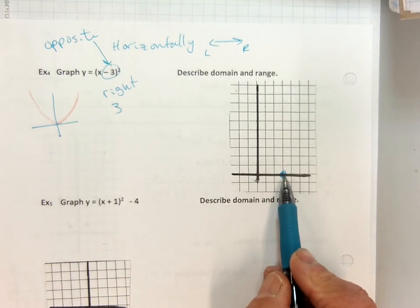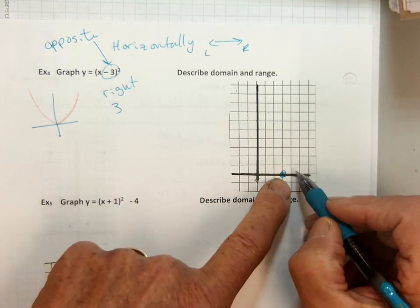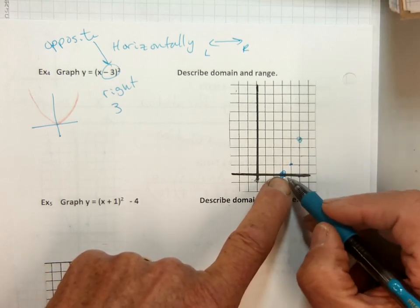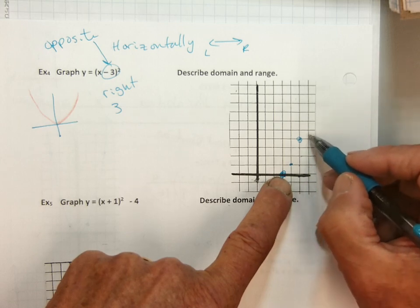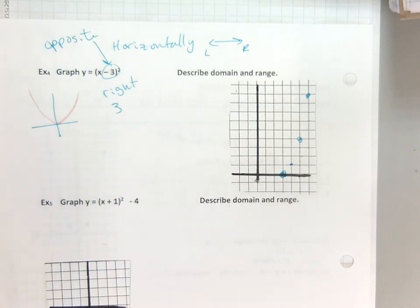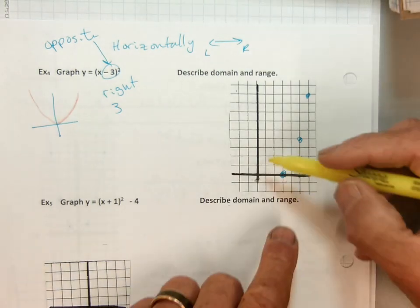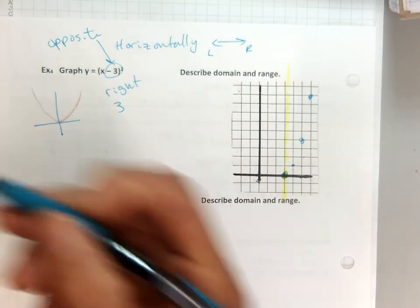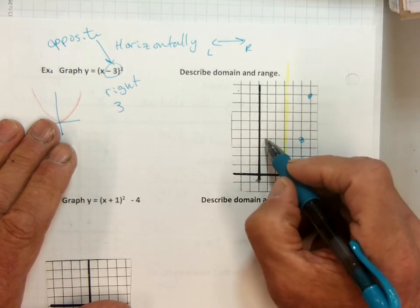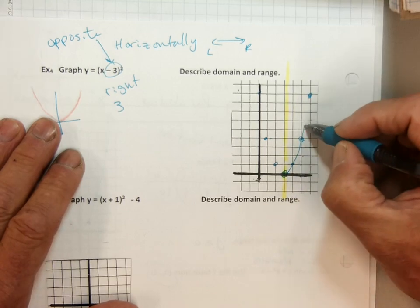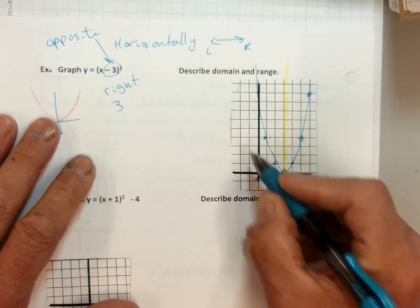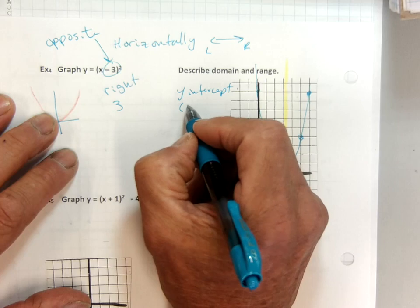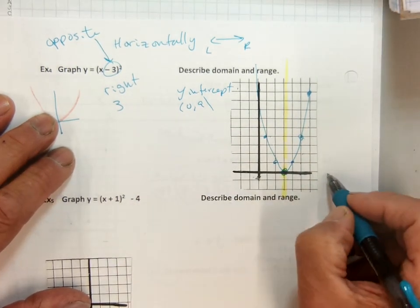I'm going to graph it the same way. Over 1: 1 squared is 1. Over 2: 2 squared is 4. Over 3: 3 squared is 9. The line of symmetry is always at the vertex — right here. So it folds right along its vertex. It has a y-intercept up here at (0, 9), and it has an x-intercept at (3, 0).